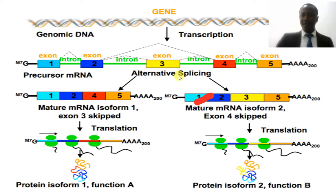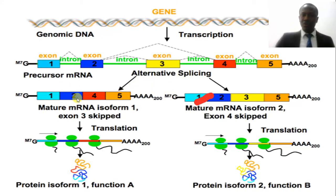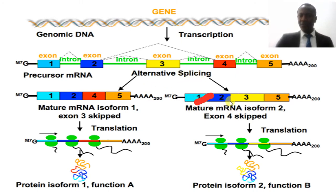They are removed by a process called splicing. The splicing process will remove all these introns from the exons, and later these exons are going to combine. This splicing process gives you the combination of different exons.